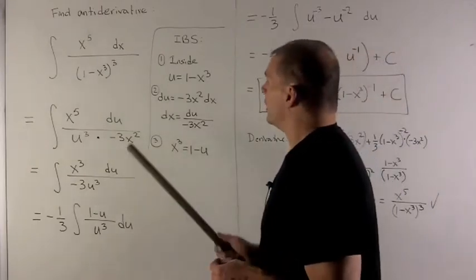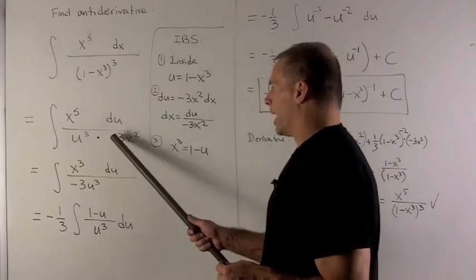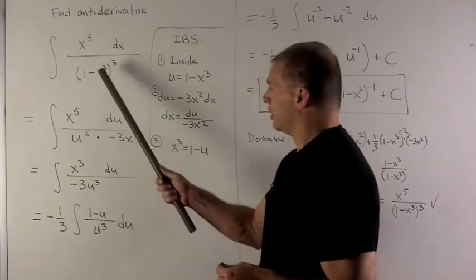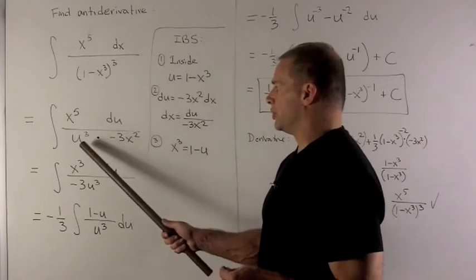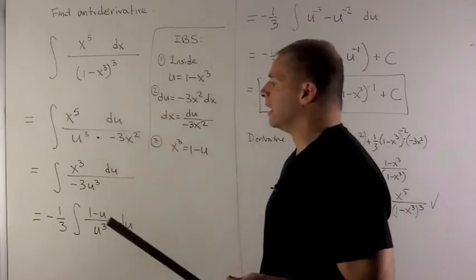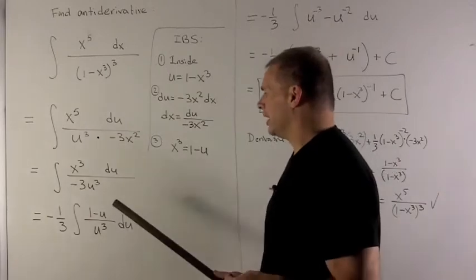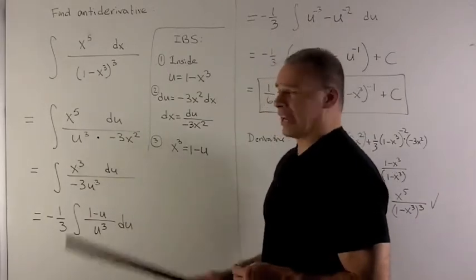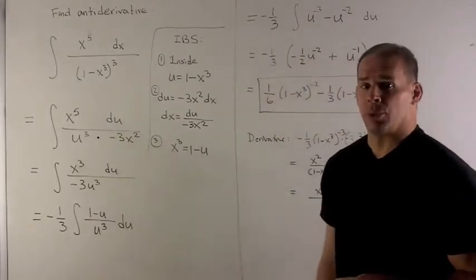So here dx becomes du over minus 3x squared. Our composition just becomes u cubed and then we have x to the fifth up top. I do some cancellation and then we notice we're stuck with an x cubed.